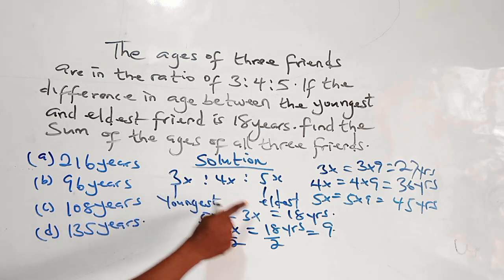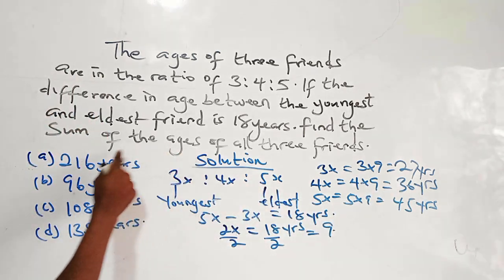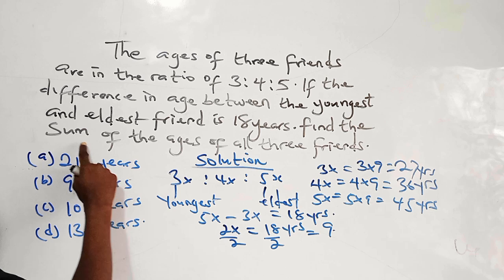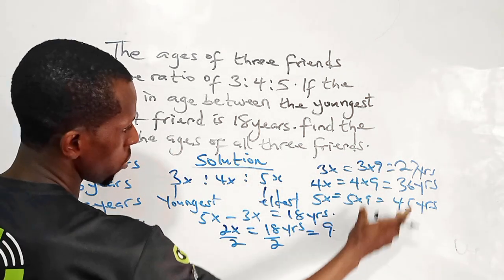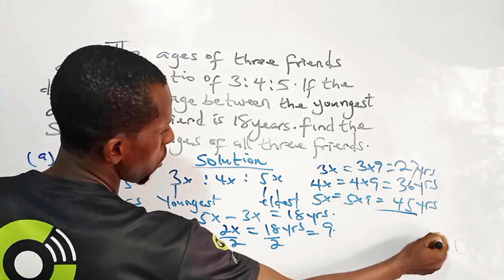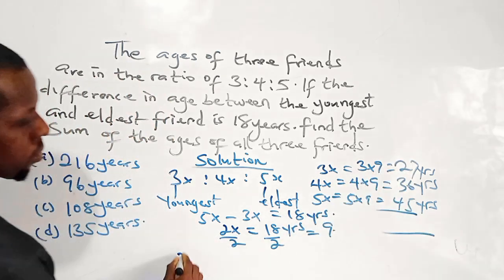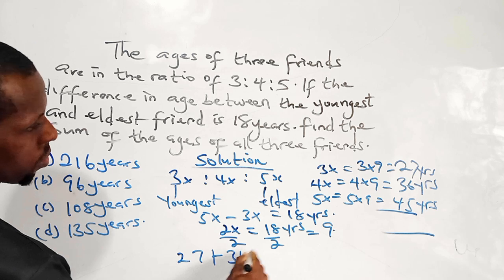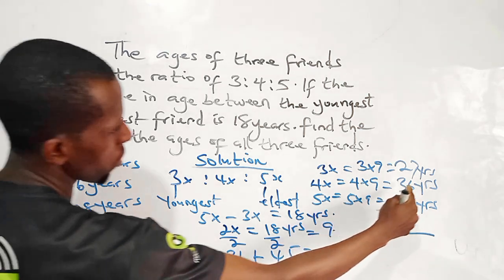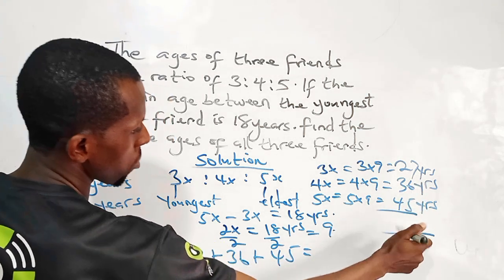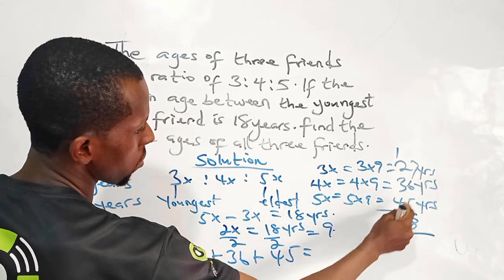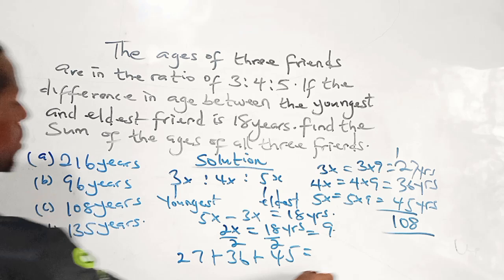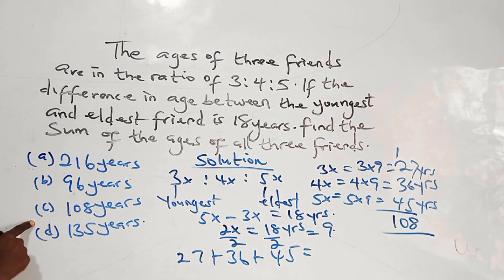So once we have established the ages, from here you can determine the sum of all ages. So what do we do to do that? We add up all these ages by saying 27 plus 36 plus 45. So by time we do that, we have 7 plus 6 is 13, plus 5, we add it as 18. 1 plus 2 is 3, plus 3 is 6, plus 4 is 10 and 8. So that means from the option, the best answer is 108 years.